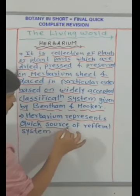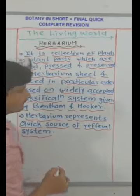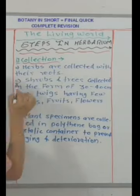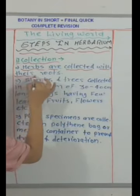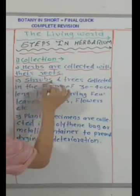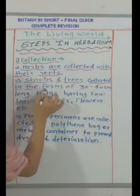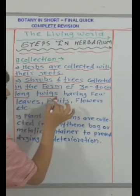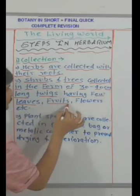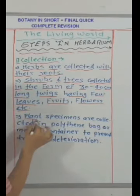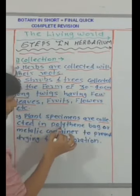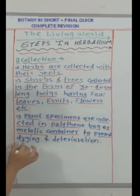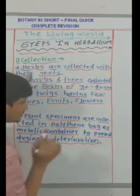Herbarium represents a quick source of referral system. Steps in herbarium — Number 1: Collection. Herbs are collected with their roots. Shrubs and trees are collected in the form of 30 to 40 cm long twigs having a few leaves, fruits, flowers, etc. Plant specimens are collected in polythene bags or metallic containers to prevent drying and deterioration.